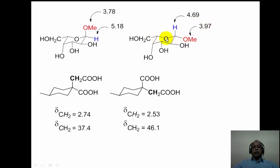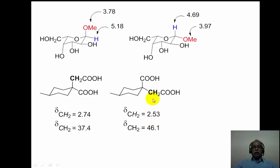In the carbon-13 spectrum, axial CH2 and equatorial CH2 carbons can also be distinguished. The axial CH2 carbon comes at a lower delta value compared to the equatorial CH2 carbon, which comes at a higher delta value — for example in the carbon-13 spectrum of cyclohexane dicarboxylic acid.